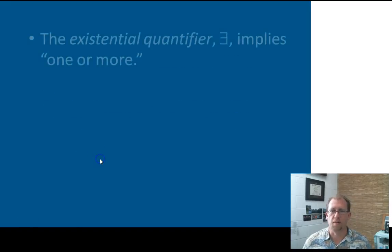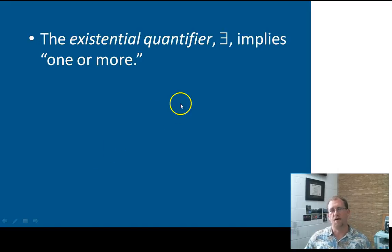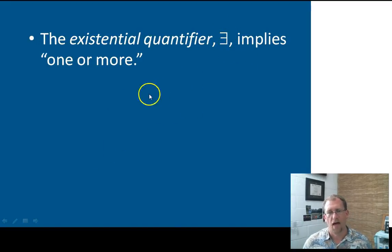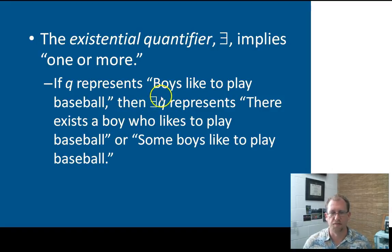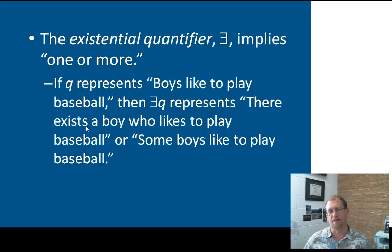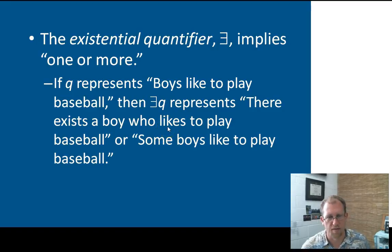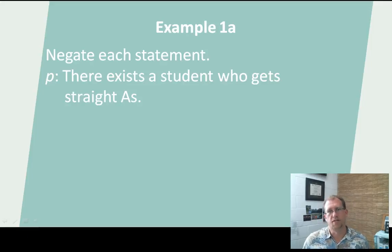We also have an existential qualifier, and that's a backwards E, which implies one or more. So if Q represents 'boys like to play baseball,' then this existential qualifier before Q means there exists somewhere at least one boy who likes to play baseball, or you could say some boys like to play baseball — one or more than one.